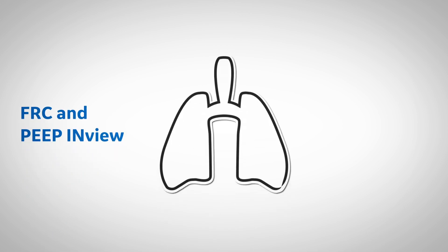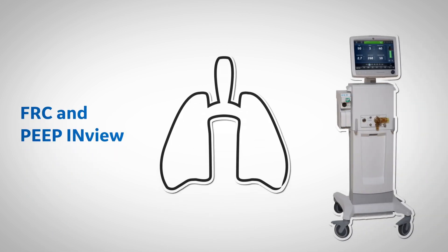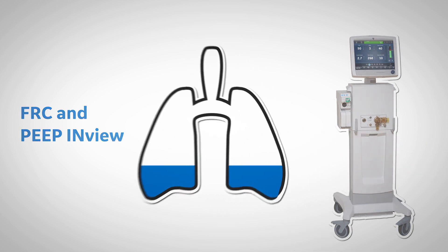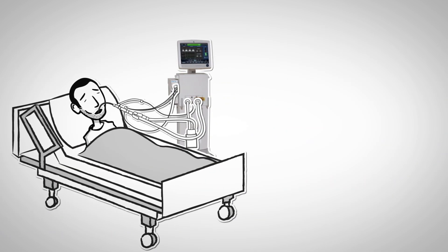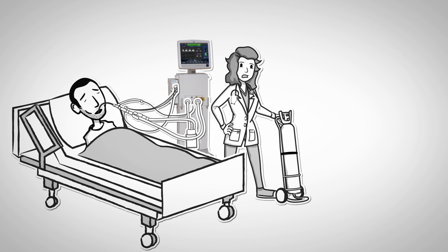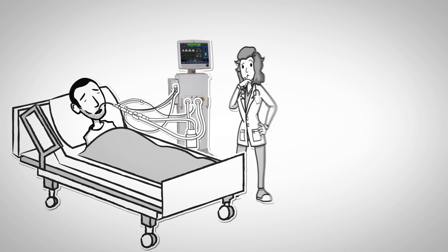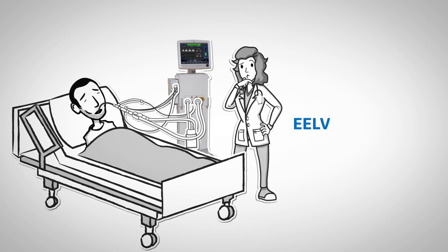FRC and PEEP InView are two different procedures on the CareScape R860, which allow clinicians to get a clearer view of lung mechanics. Functional residual capacity, or FRC, is the volume held in the lungs at the end of expiration on a spontaneously breathing patient. When a patient is intubated, measuring FRC is difficult without the disruption of mechanical ventilation and the use of additional non-medical gas sources. The term end expiratory lung volume, or EELV, is used to describe FRC when a patient is intubated and positive end expiratory pressure, or PEEP, is added.